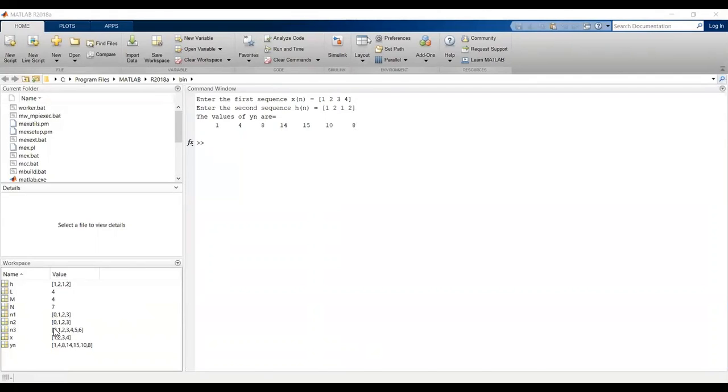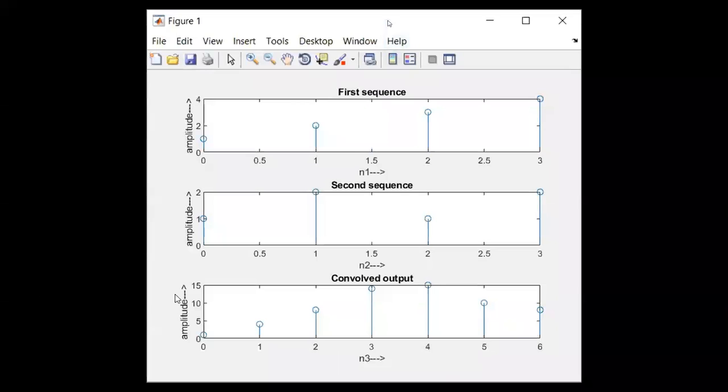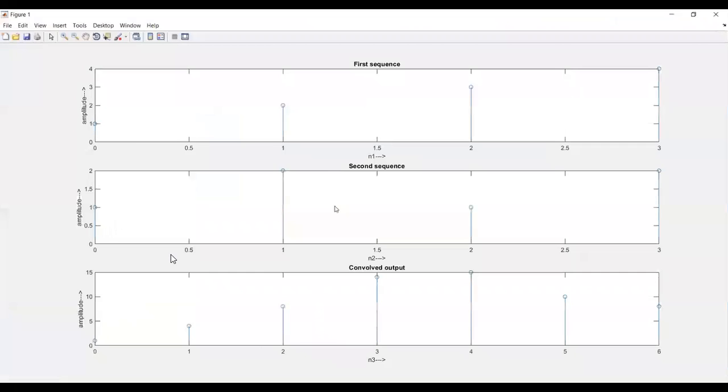All the variables used in the code can be seen in the display command workspace. This is the output we are getting: the first sequence, the second sequence, and the output. These are the index values. The index starts from 0, then 1, then 2, up to Lx plus Lh minus 1.